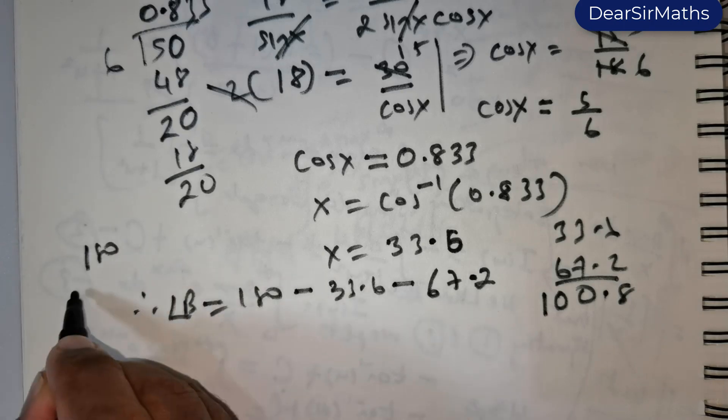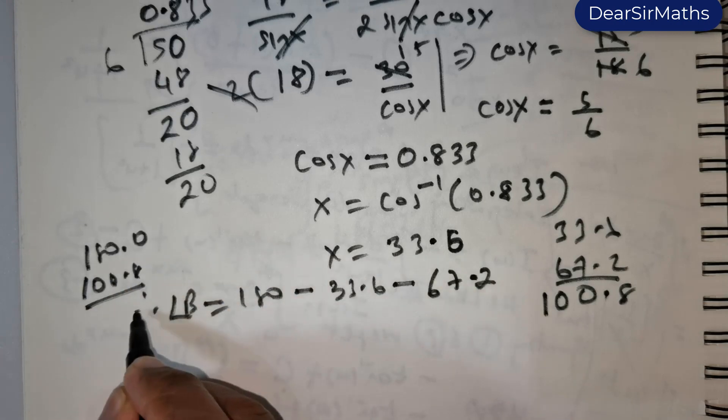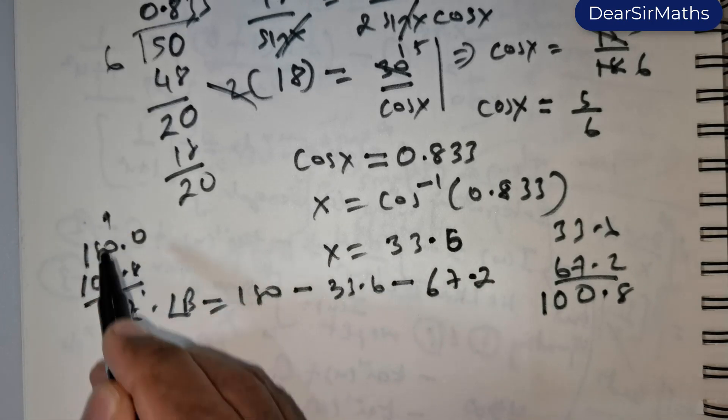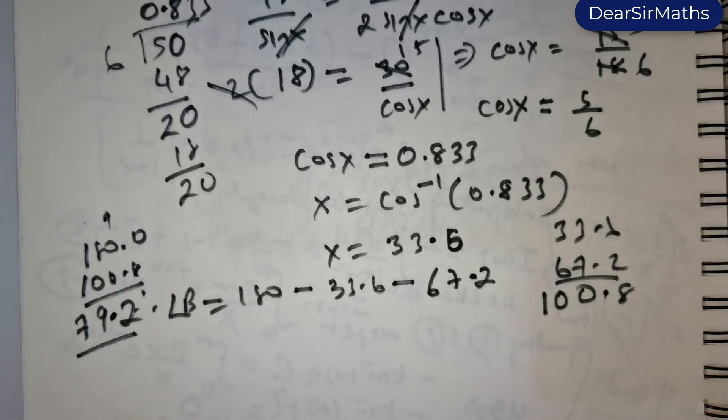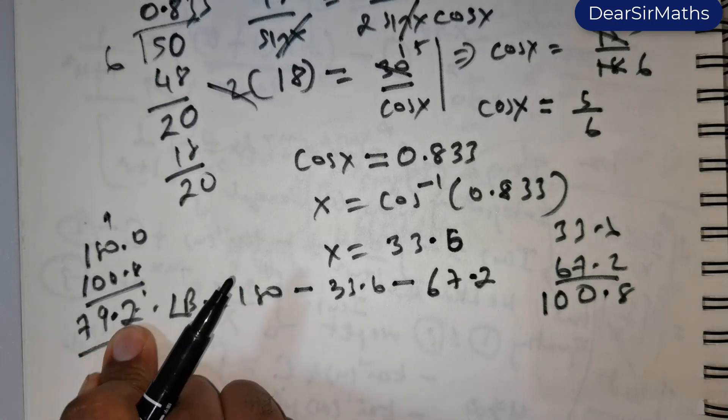So from 180 we subtract 100.8. This will give me a 2 there and there is going to be a 9 here. So bring that 9 down and this is going to be 7.